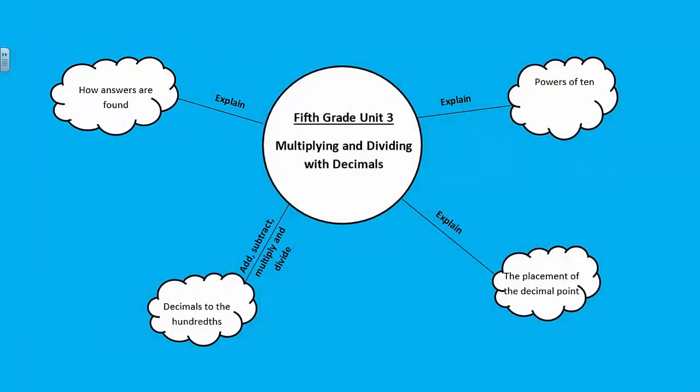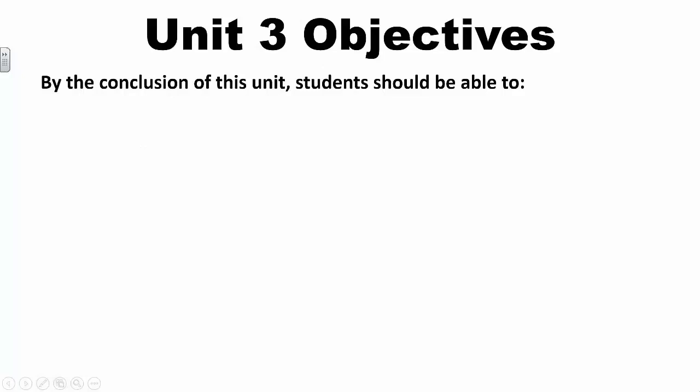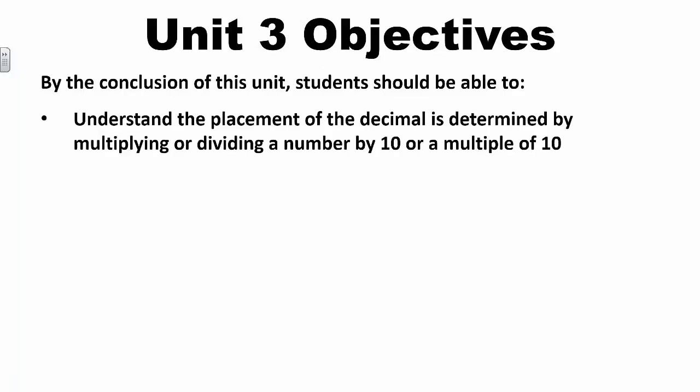At the 5th grade level, concepts are emphasized from a hands-on approach in order to develop understanding rather than relying on memorization of rules and procedures. By the conclusion of Unit 3, students should be able to understand that the placement of the decimal point is determined by multiplying or dividing a number by 10 or a multiple of 10.